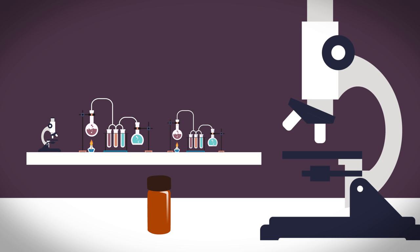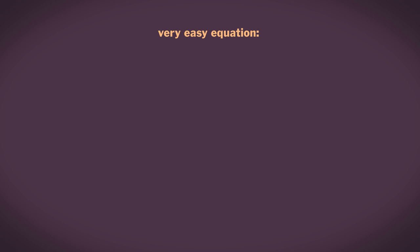The good news is that there is a very easy equation to help us calculate dilutions. M1V1 equals M2V2. Let's have a look at where it comes from, and then we'll see what it means.